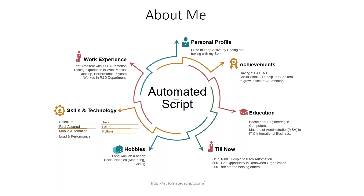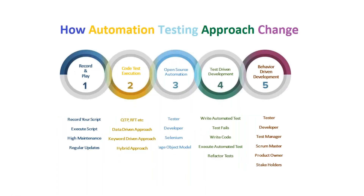I also do social work where I have helped around 1,500 plus people to learn automation, and out of those, 800 have already got opportunities in renowned organizations. Personally, I have a son of five years. My education includes a BE in Computers and an MBA in International Business and IT.